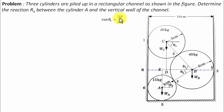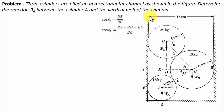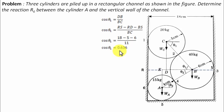We need the value of BD, which equals RS minus RD minus BS. RS equals 18 cm, RD equals 5, and BS equals 6. Putting in all these values gives cos(theta1) = 0.636, and taking the inverse gives theta1 = 50.48 degrees.